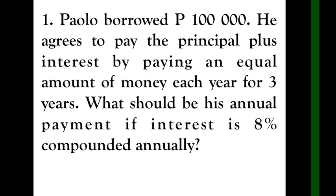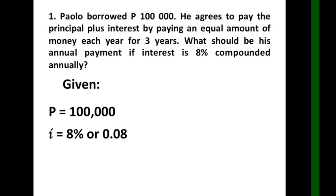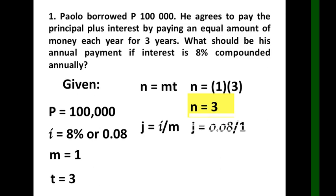Paulo borrowed 100,000 and will pay it back with 8% interest compounded annually. Since he already borrowed the money, that is the present value. So P equals 100,000; i equals 8% or 0.08; m equals 1, because annually means once per year; and t equals 3 years. Solving for n: 1 times 3 equals 3. For j: 0.08 divided by 1 equals 0.08.